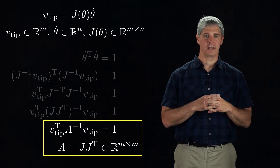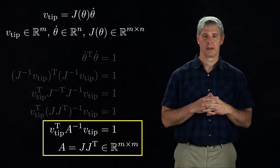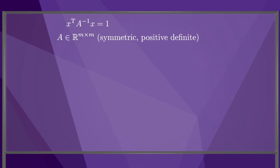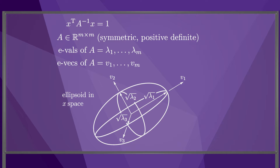The A matrix is both symmetric and positive definite, and so is its inverse. Now assume we take this same equation, but replace v-tip by a generic vector x. The eigenvalues of the matrix A are called lambda 1 to lambda m, and the corresponding eigenvectors are v1 to vm. It is well known that the quadratic equation x transpose times A inverse times x equals 1 defines an ellipsoid of x values that satisfy the equation.